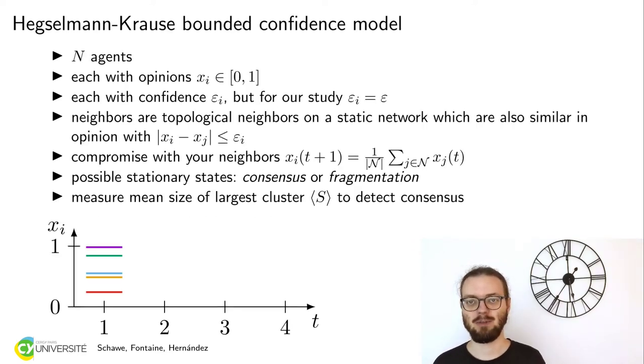We are studying an established model, which is the Hegselmann-Krause model. It contains N agents and generally we are interested in the large N limit. Each agent has an opinion, which is some continuous number between 0 and 1. In the picture on the bottom, I gave each agent a color and its opinion is the vertical coordinate.